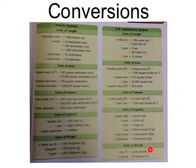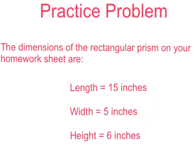You will be using these charts extensively on your math work tomorrow. Here is your practice problem for the day. The dimensions of the rectangular prism on your homework sheet are: length equals 15 inches, width equals 5 inches, and height equals 6 inches. Please read the directions on your homework sheet and find the answer on the back of your paper. Make sure to label the figure on your sheet and write your answer on the front side using the correct units and exponents.